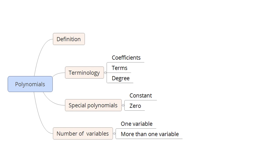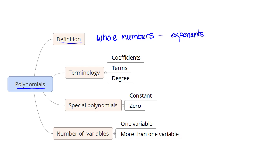Let us look at some terms and basic ideas associated with polynomials. The formal definition of polynomials says that polynomials are algebraic expressions that have only whole numbers as the exponents of the variables. This is the main idea you need to understand — whole numbers as exponents of the variables.